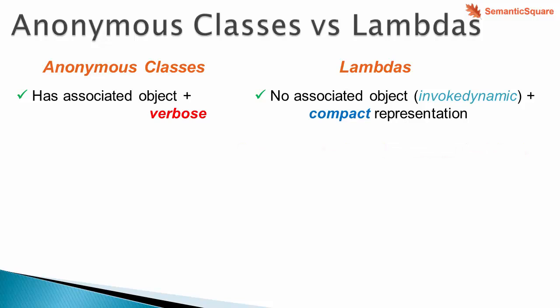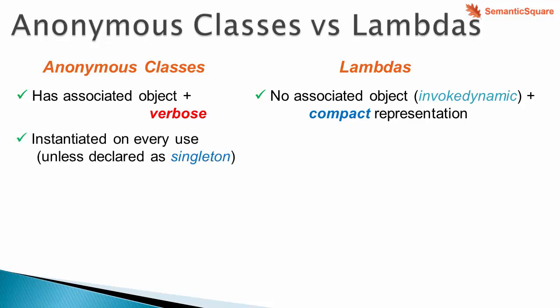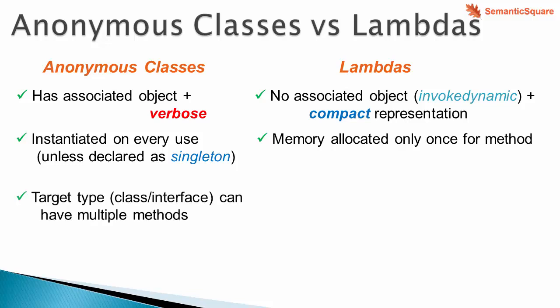Brian Goetz, the Java language designer, mentioned this in one of his talks and specified some performance benchmarks about how lambdas are more efficient than using anonymous objects. Lambdas have a more compact representation — without the new keyword, type name, or method name. Anonymous objects are created on every use unless declared as singletons using static final fields. With lambdas, memory is allocated only once for the method, hence very little memory footprint.